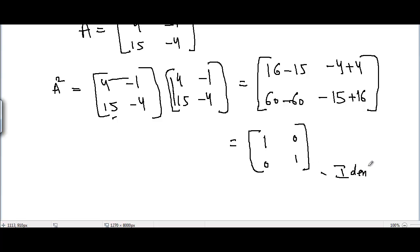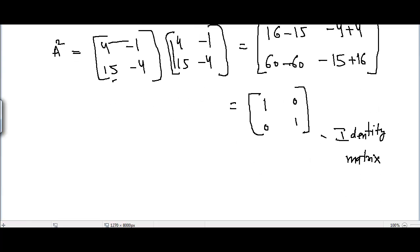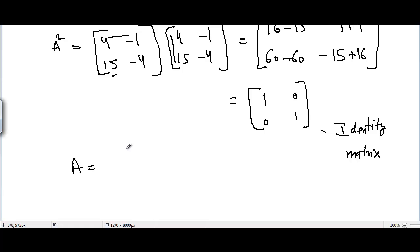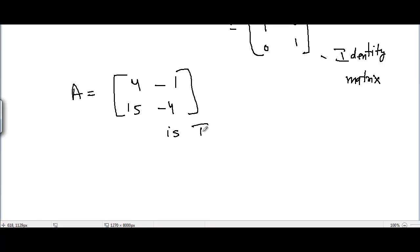Therefore we can say that the example we considered, A equals [[4, -1], [15, -4]], matrix A is an involutory matrix because A squared was equal to I, the identity matrix.